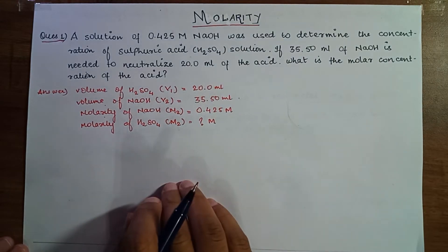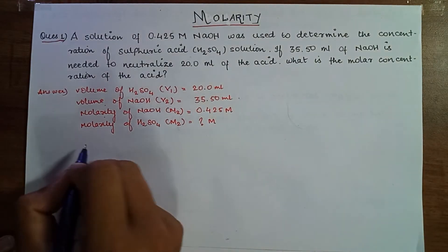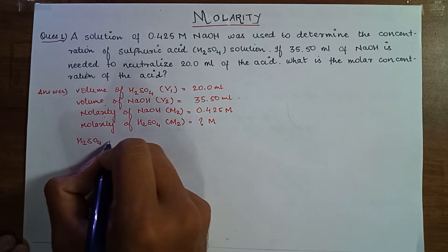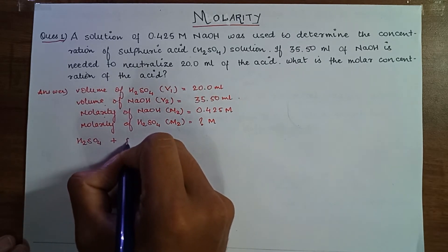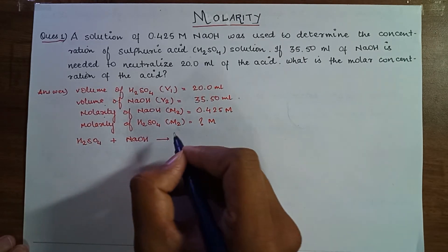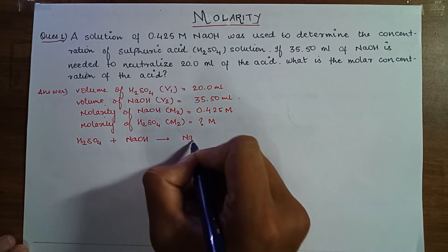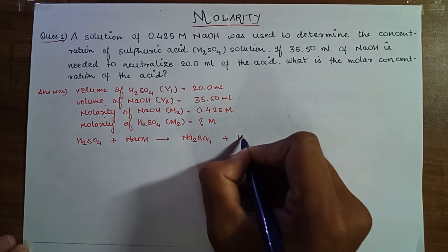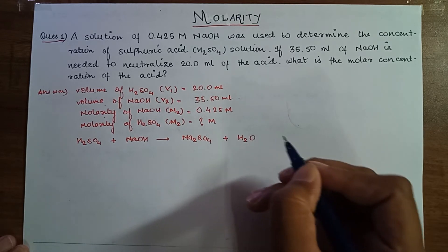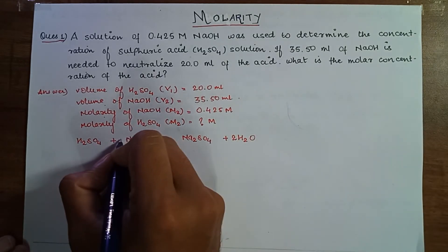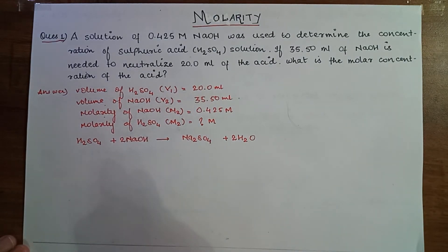In order to solve this question, first write down the balanced equation. H2SO4 will react with NaOH, it will give Na2SO4, this is my salt, plus water, as it is a neutralization reaction. On balancing, we have 2 moles of H2O and 2 moles of NaOH will react.